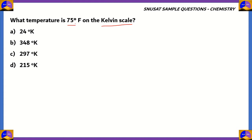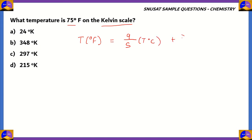We have to convert a temperature in degrees Fahrenheit to the Kelvin scale. We know that we can convert degrees Fahrenheit to degrees Celsius, and from degrees Celsius you can easily convert the temperature to degrees Kelvin. The temperature in degrees Fahrenheit is 9/5 times the temperature in degrees Celsius plus 32.